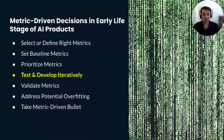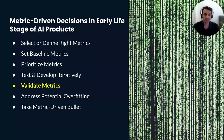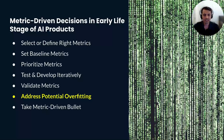Use metrics to drive the iterative development process — continually test and measure the product against these metrics and make adjustments based on results. As you gather data and learn more about how your product is used, validate whether your chosen metrics are indeed the right ones. Do they accurately reflect user needs and product performance? If not, adjust them. In the earliest stages, the product might perform exceptionally well on certain metrics due to overfitting, so use techniques like cross-validation to ensure the model generalizes well.